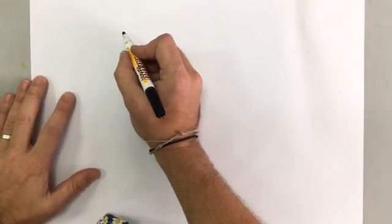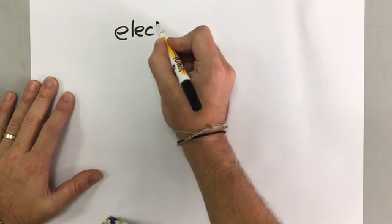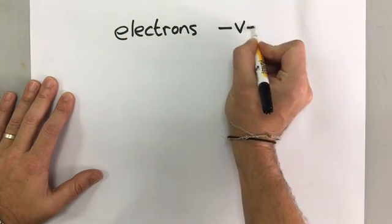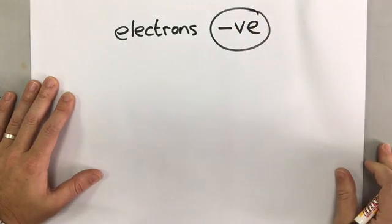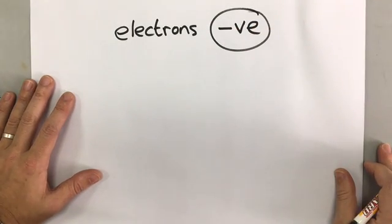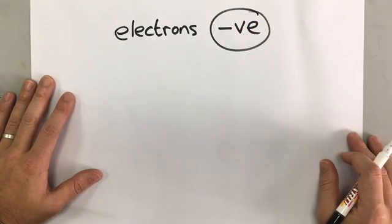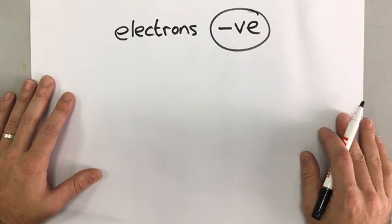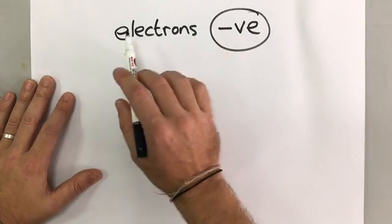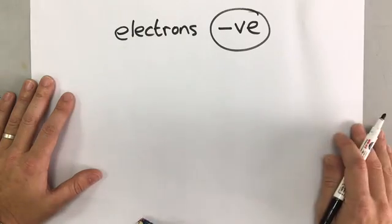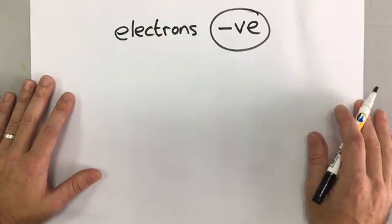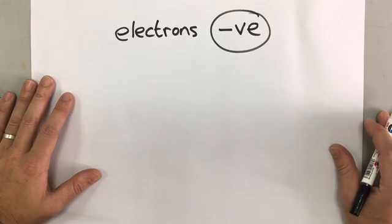You might also know from chemistry that electrons have a negative charge within the atom, and protons have the positive charge. When we're talking about electricity, we're only really talking about electrons. Negatively charged electrons can move around, and it is that movement of electrons that creates a charge or creates a current.